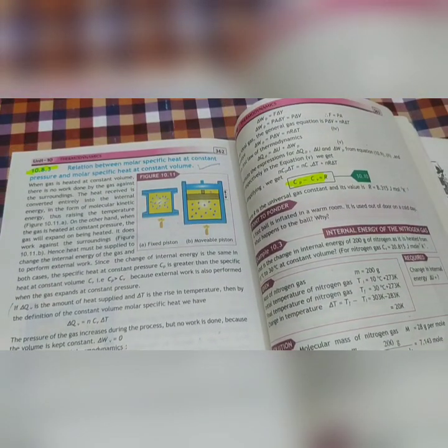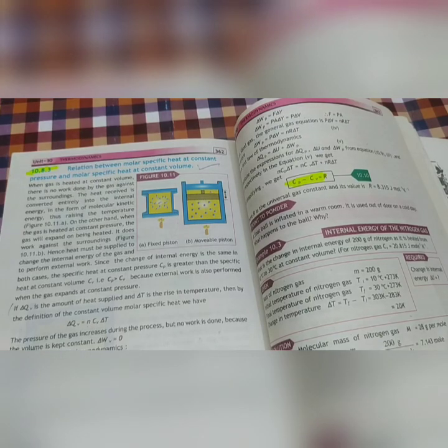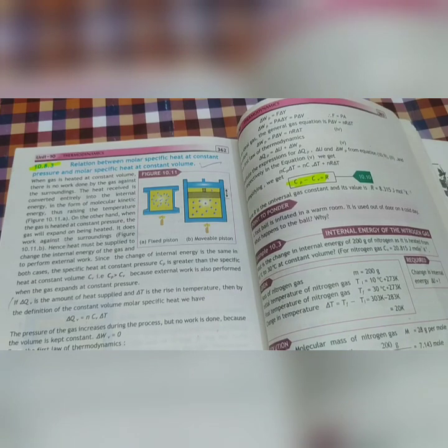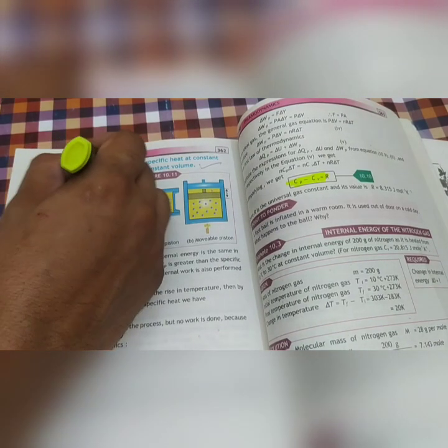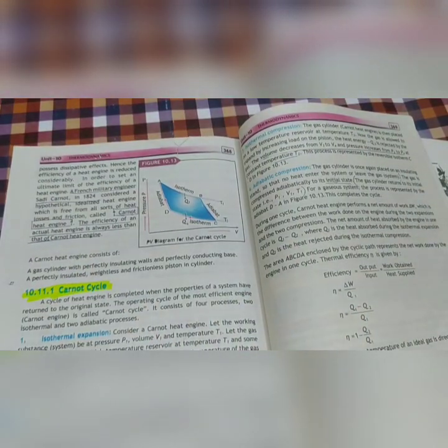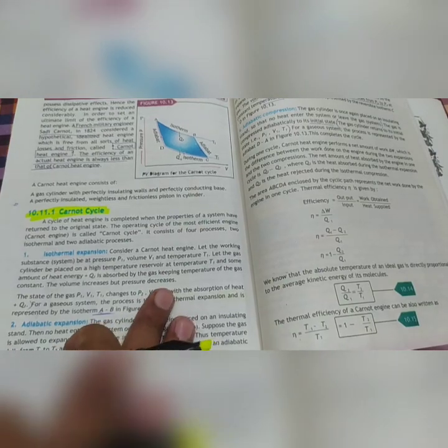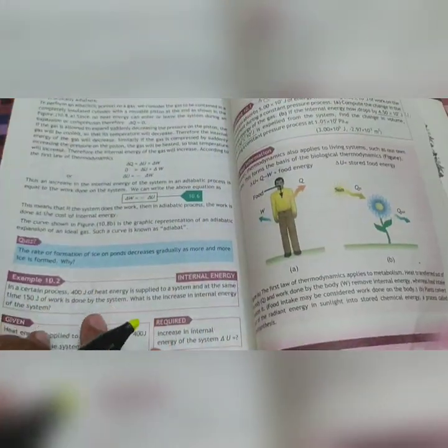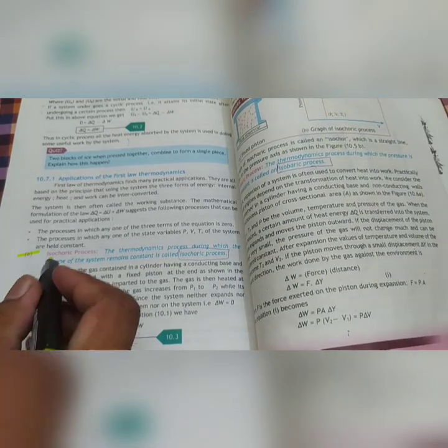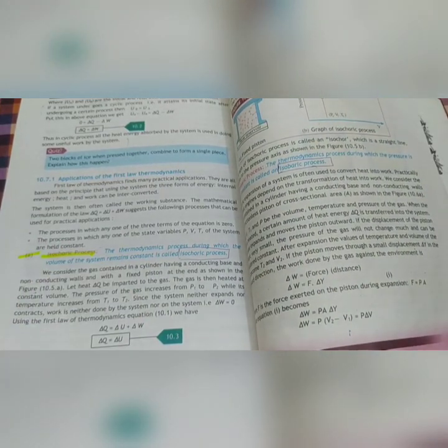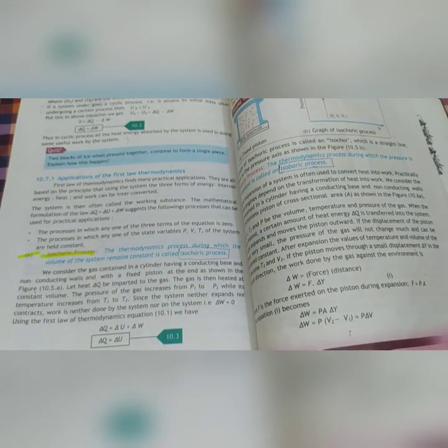Relation between molar specific heat at constant volume and molar specific heat at constant pressure, which means CP minus CV equals R. That's also a proof. This is very important topic, Page Number 362. And last one is Carnot Cycle and Carnot Engine, Page Number 267 and 268. Completely you have to prepare. And the First Law of Thermodynamics, which means Isochoric, Isobaric, Isothermal, and Adiabatic. These are very good to prepare. These are often coming.